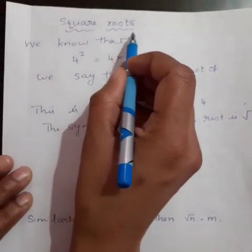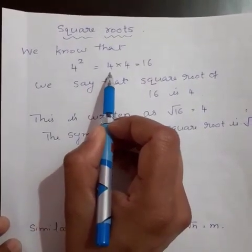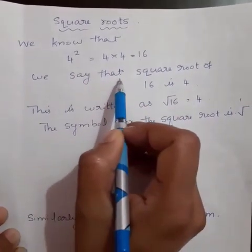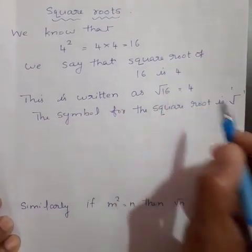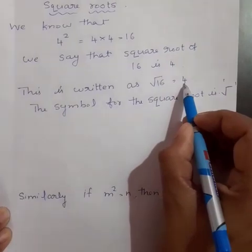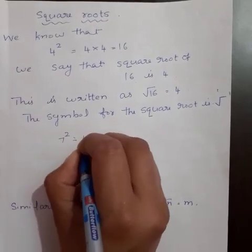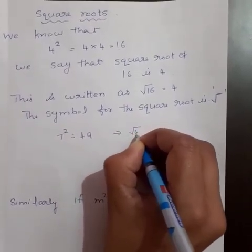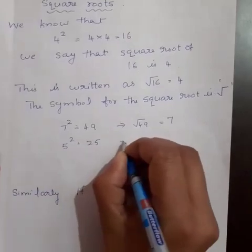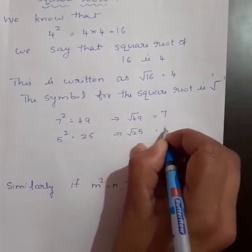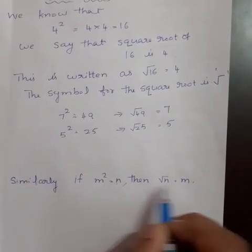Let us study about square root of a number. What is the square root of a number? We know that 4 square is equal to 4 into 4, that is equal to 16. We say that square root of 16 is equal to 4. This is written as √16, and this is the symbol for square root, that is equal to 4. Similarly, 7 square is equal to 49, and square root of 49 is equal to 7. 5 square is equal to 25, and square root of 25 is equal to 5. Similarly, if m square is equal to n, then √n is equal to m.